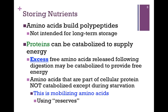Amino acids build polypeptides, but we don't build polypeptides for nutrient storage — they are for some other use and have some function in the cell. Now of course we can break down proteins; they can be catabolized to supply energy. We have protein in our diet, and that gets broken down through digestion, and those excess free amino acids can be catabolized to give us energy. However, amino acids that are part of our normal cellular protein are not catabolized or broken down except during starvation. This is what we refer to as mobilizing amino acids — not using what we eat, but actually breaking down cellular protein because we don't have any other resource. This is, in a sense, using our amino acid reserves, although they're not really intended for that purpose.